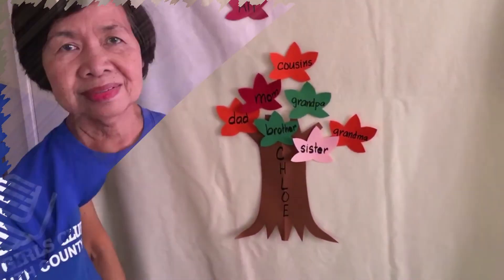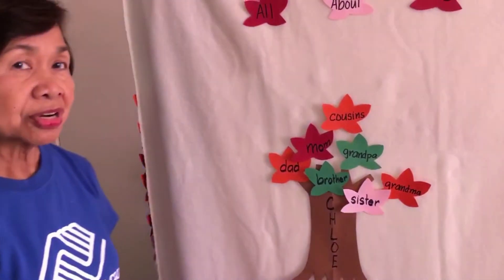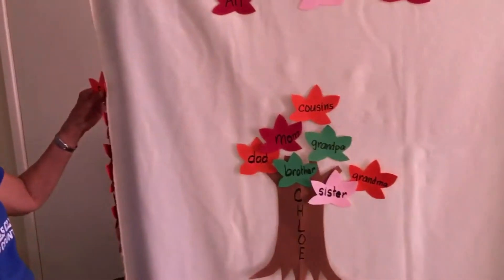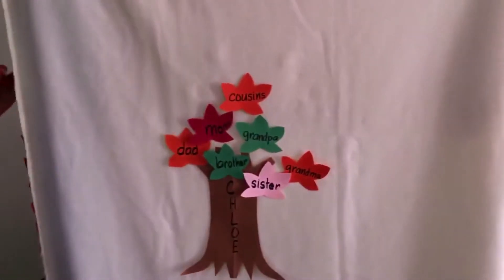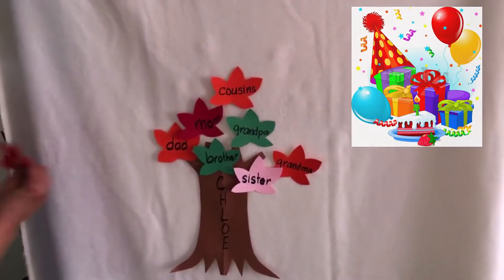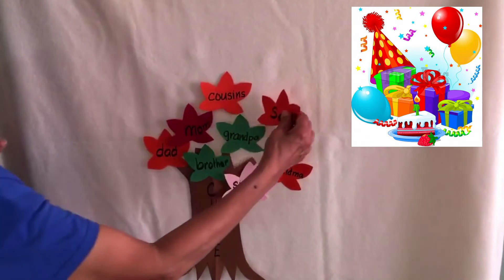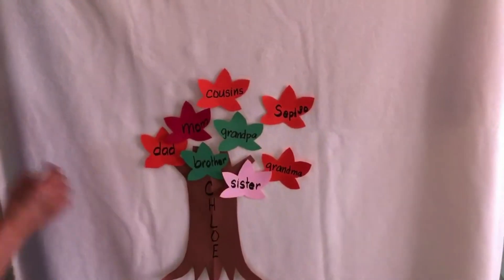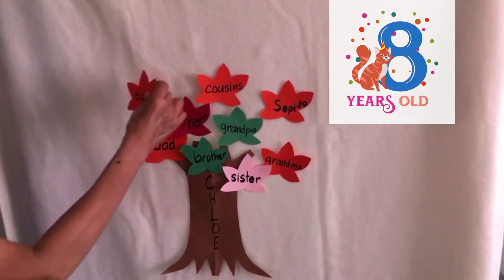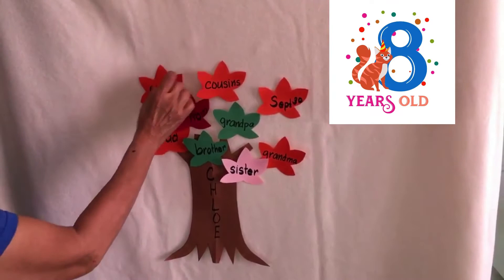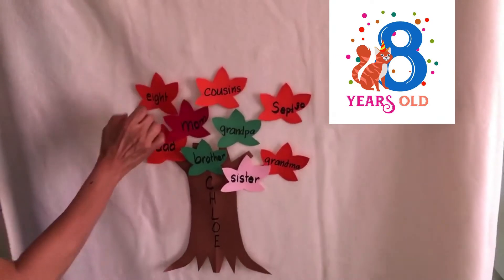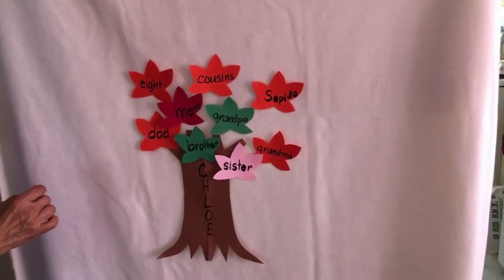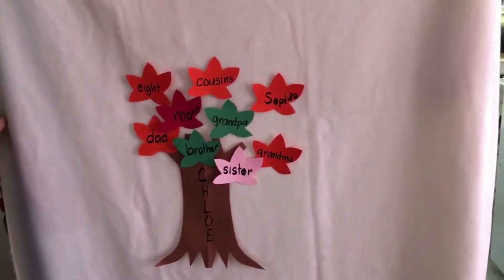You can add some more information about yourself. For example, when is your birthday? It's September 30th. And how old are you? You're eight years old. How about what are the things that you like to do?